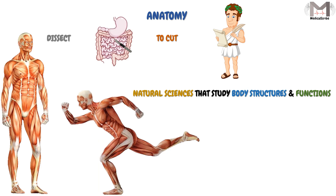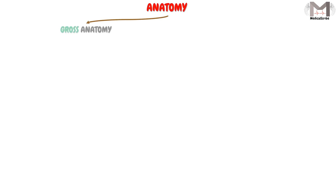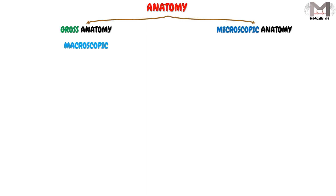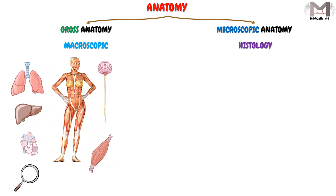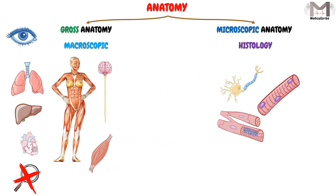Anatomy in general is divided into two types: gross anatomy, also called macroscopic anatomy, and microscopic anatomy, also called histology. Gross or macroscopic anatomy means we study the different body structures and their functions without using magnifying tools — we study with our naked eyes only. Histology or microscopic anatomy means we study the different body structures and their functions at the cellular or tissue level.